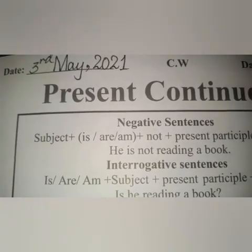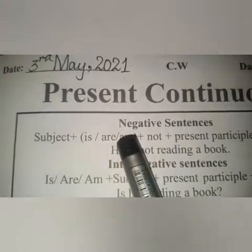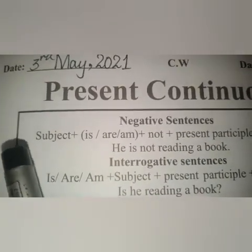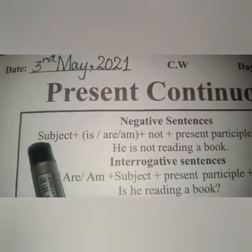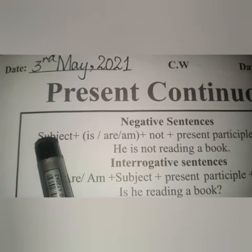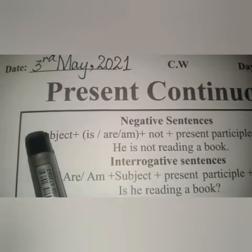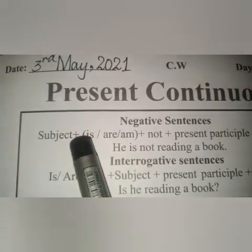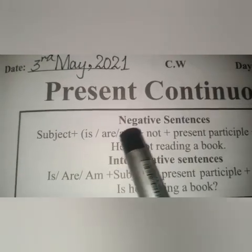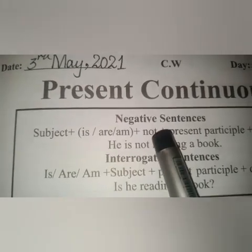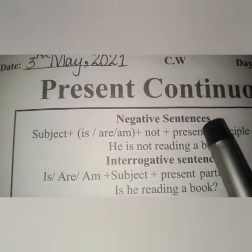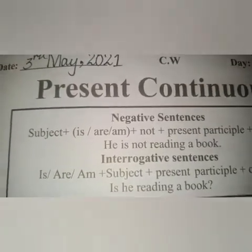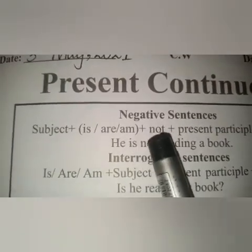Now students we are going to make negative sentences. Let's start. Firstly we will see the structure: Subject plus helping verbs — is, am, are — plus not, plus ING form of verb, plus object.